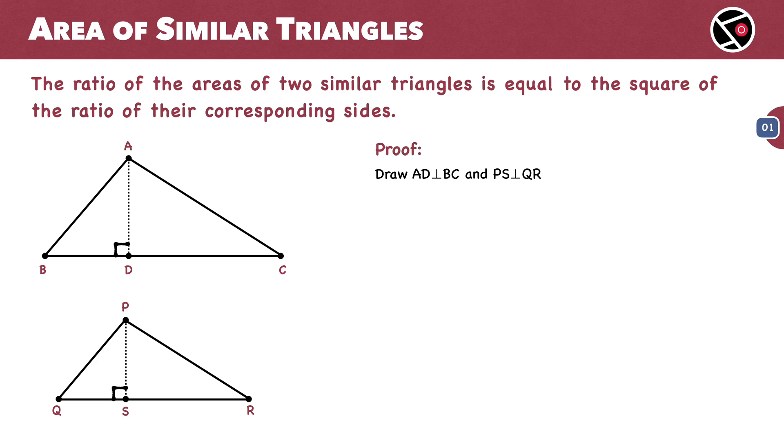Next, consider Triangles ABD and PQS. Angle BDA equals Angle QSP. Both are 90 degrees. This is equation number 2.